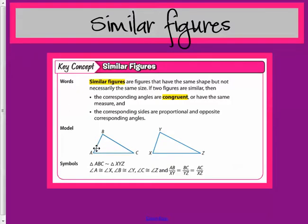So what I mean by similar is that angle A and angle X are congruent. This symbol right here means congruent. Angle B and angle Y are congruent, and angle Z and angle C are congruent. So the two figures are similar.